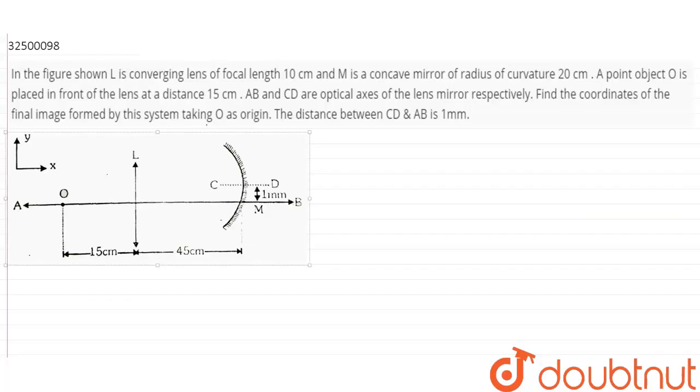The question is, in the figure shown, L is a converging lens of focal length 10 cm, M is a concave mirror of radius of curvature 20 cm. A point object O is placed in front of the lens at a distance 15 cm. AB and CD are optical axes of the lens and mirror respectively. Find the coordinates of the final image formed by this system taking O as origin. The distance between CD and AB is 1 mm.